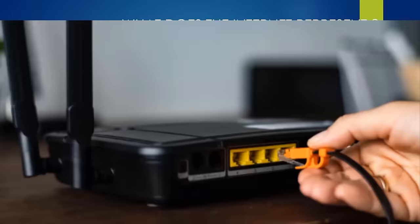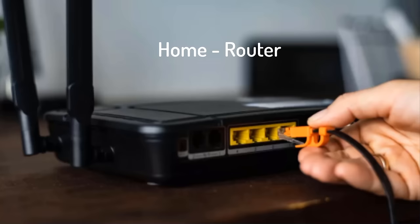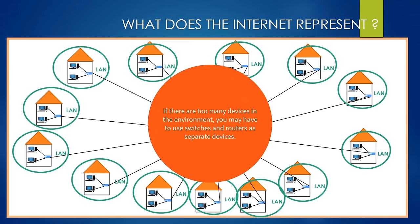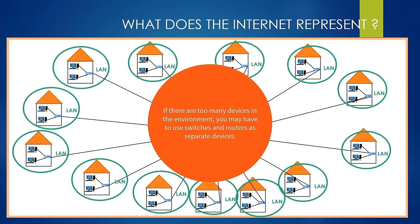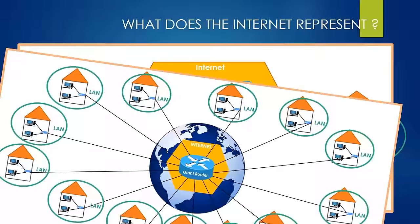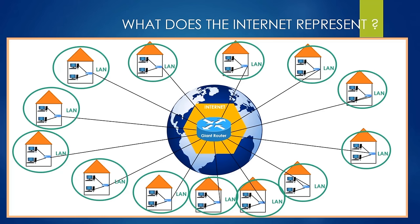Please note that if there are too many devices in the environment, the home router will be insufficient and you may need an additional switch and router. Now let's go back to our question: why are there so many routers instead of just a single router? Imagine a single router in the middle of the world — millions of electronic devices around the world would have to connect to the same router, meaning this single router would need millions of ports. It is impossible to design such a device.